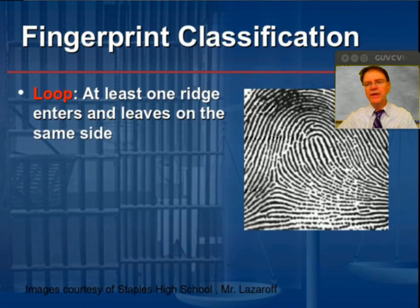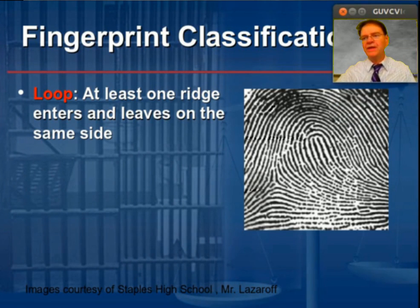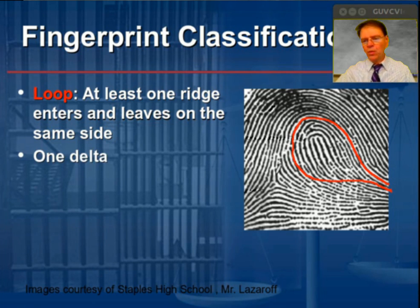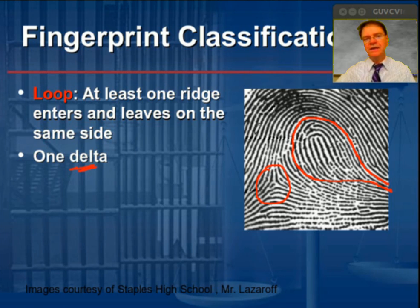When we look at classification, we can see that fingerprints fit into a relatively small variety of patterns. What we have is a loop — at least one fingerprint ridge that enters and leaves on the same side of the fingerprint. What's more, we have only one delta. You can see there's a triangular kind of pattern that we find on fingerprints that I have circled here. We refer to that as a delta. Loops are going to only have one of those.